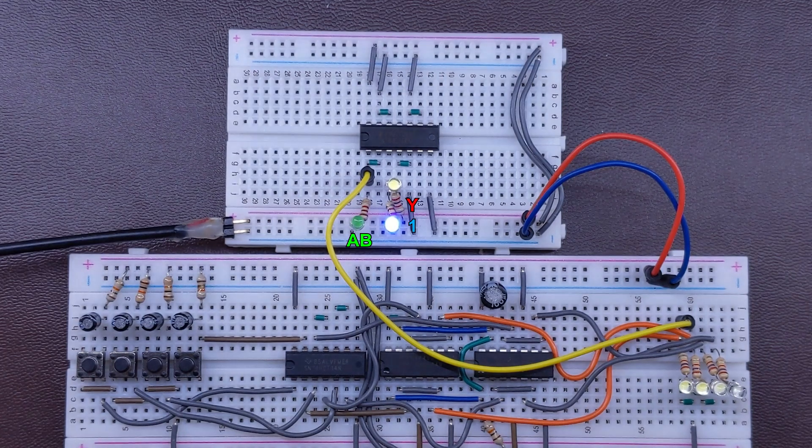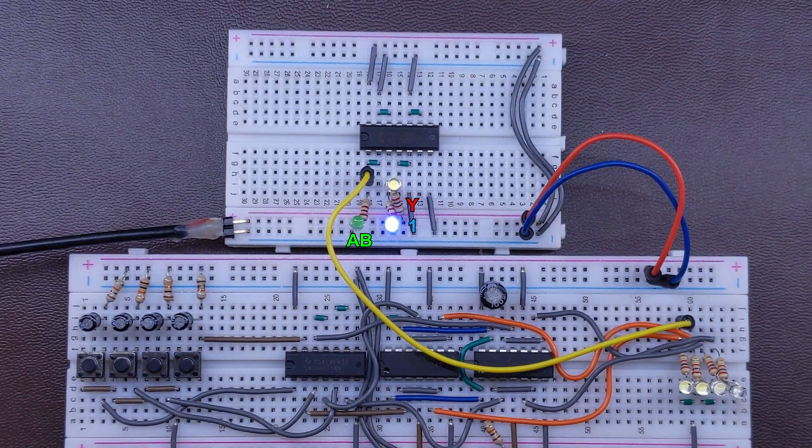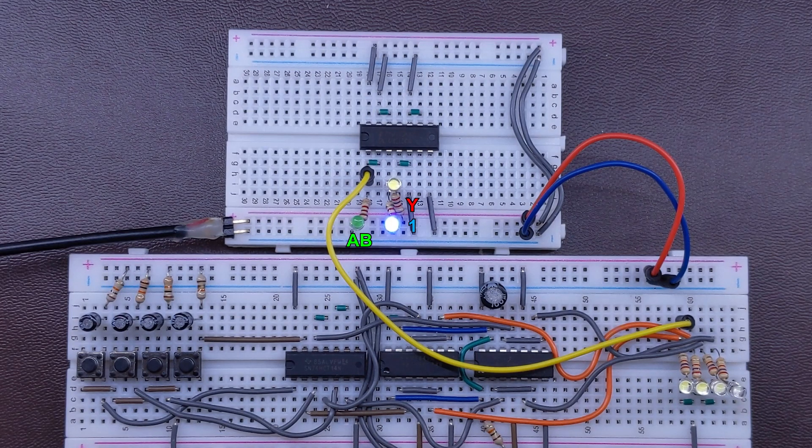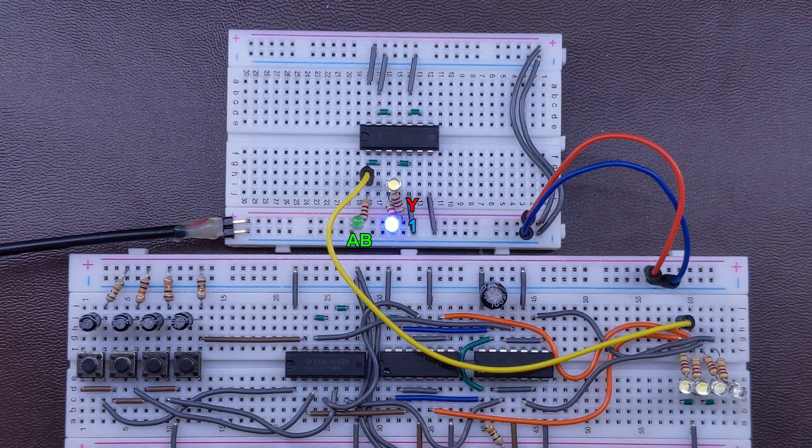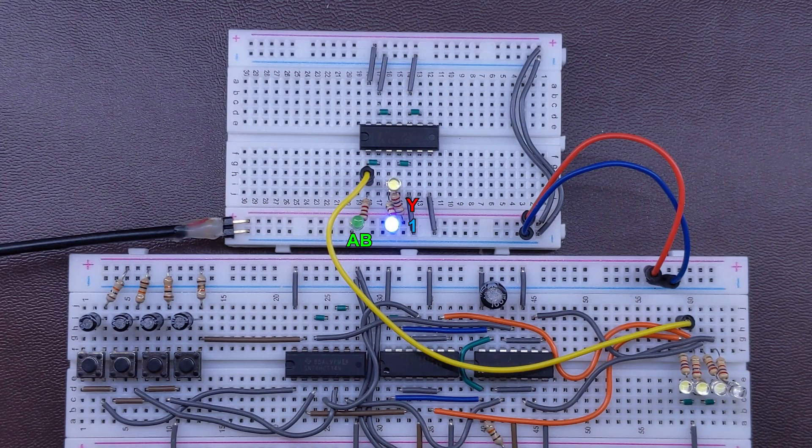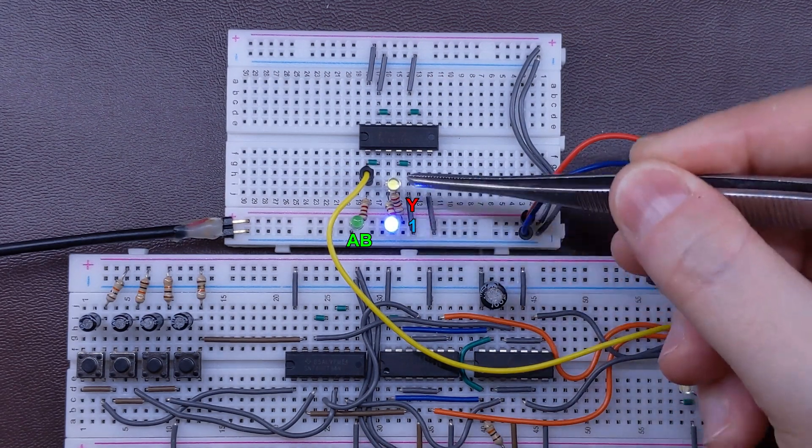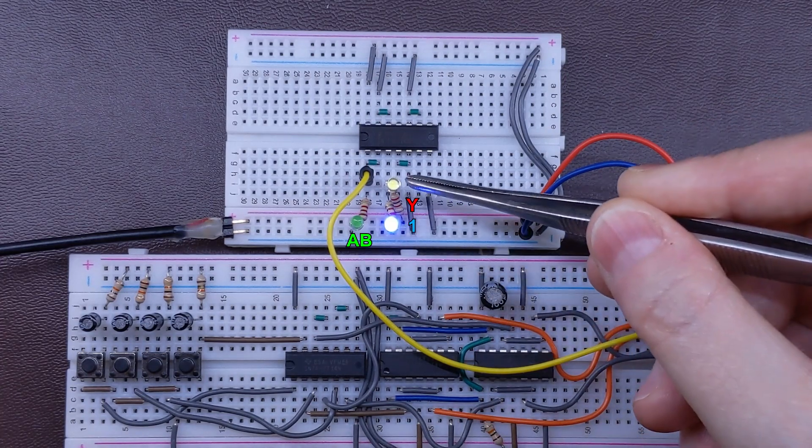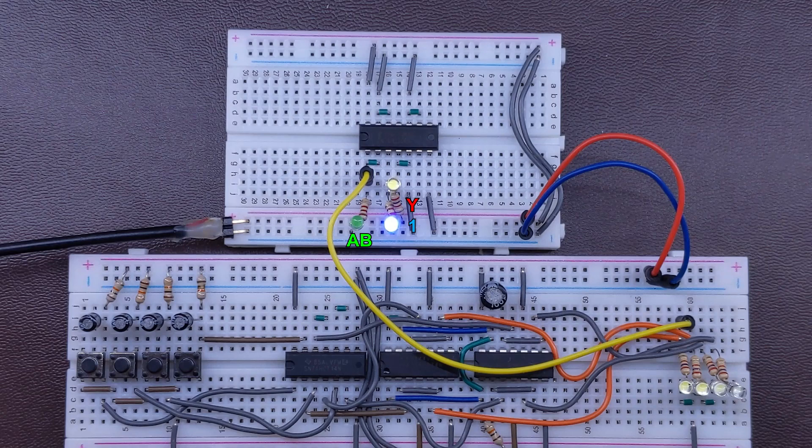This is the 7400, which contains four two-input NAND gates. We looked at the NAND gates in the third video of this series. Today, though, I've introduced a small change. I hooked up two LEDs to our gate's output. The blue one turns on when the output is high and the white one when it's low or 0.